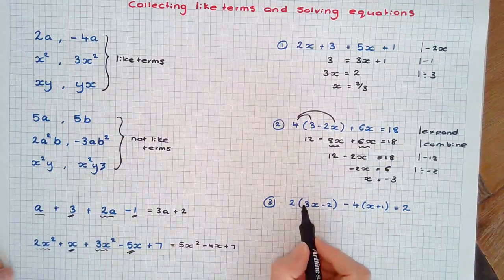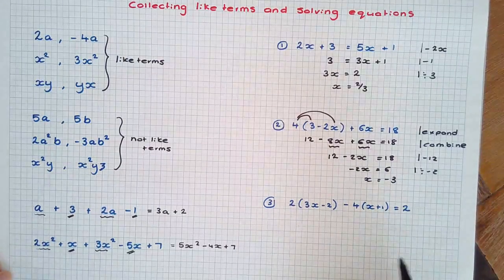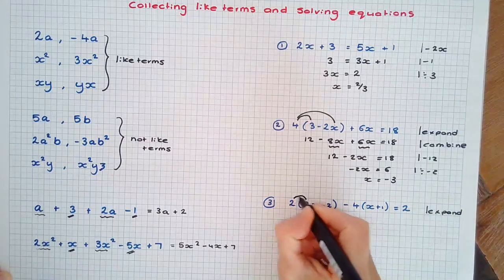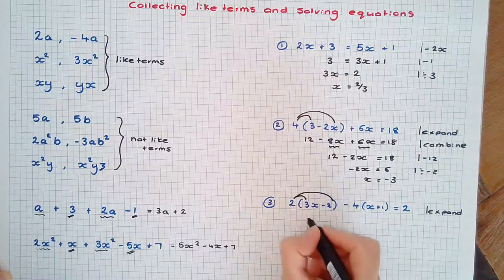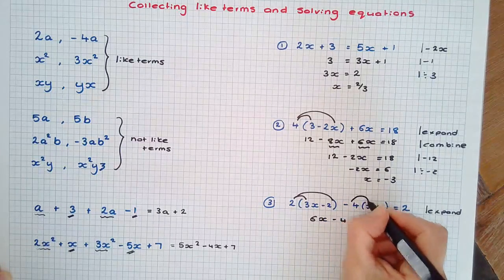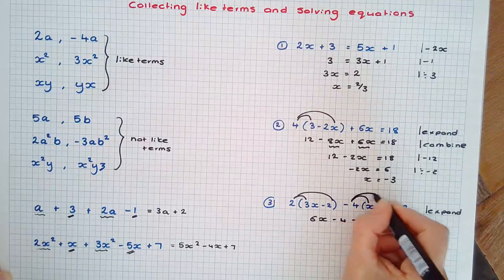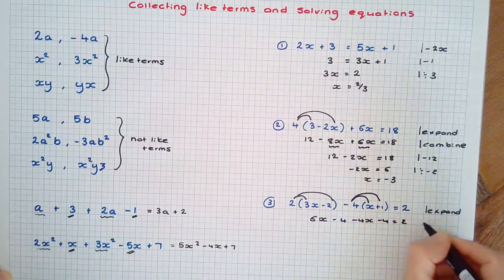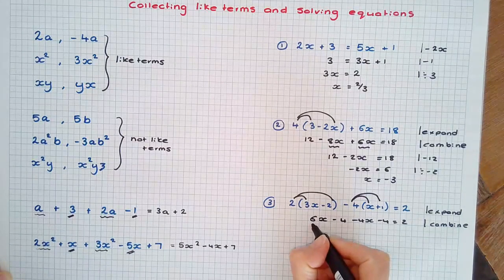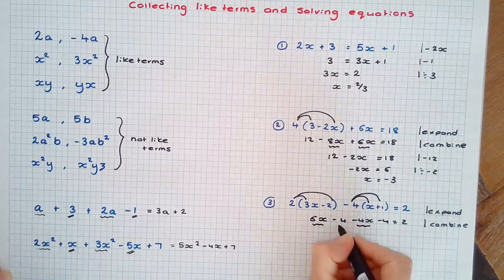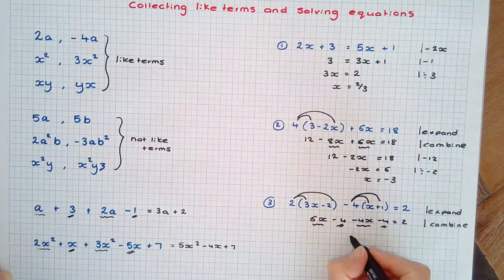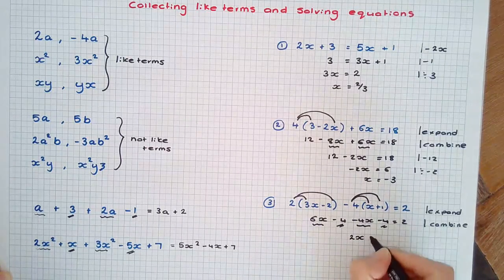Lastly, again I have brackets. Whenever we see brackets in solving equations we should expand them. I'm going to expand both sets using the distributive law. 2 times 3x is 6x minus 4, and negative 4 times x is negative 4x, and negative 4 times 1. Now I'm going to combine the like terms: 6x and negative 4x, and negative 4 and negative 4. 6x take away 4x gives 2x, and negative 4 taking away another 4 gives negative 8.